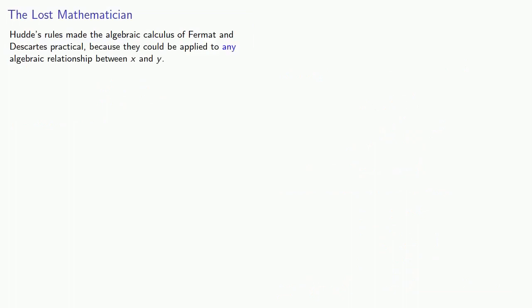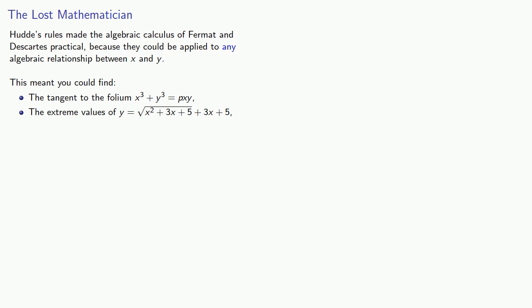Hood's rules made the algebraic calculus of Fermat and Descartes practical, because they could be applied to any algebraic relationship between x and y. This meant you could find the tangent to the folium, x cubed plus y cubed equals pxy, the extreme values of some completely arbitrary algebraic function, or the maximum value of any algebraic expression along any algebraic curve. We'll leave the details to the viewer.